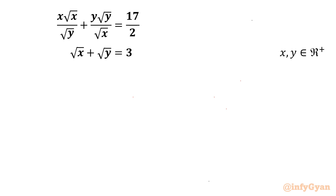Welcome back to InfiGyan friends. Today in this video we have one very interesting question from a system of equations. The equations are: x·√x / √y + y·√y / √x = 17/2, and the second equation is √x + √y = 3, where x and y belong to positive real numbers.